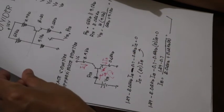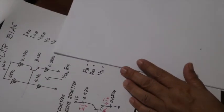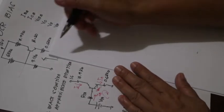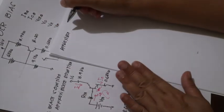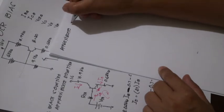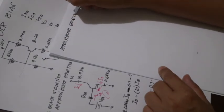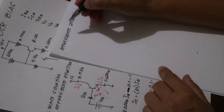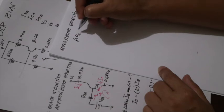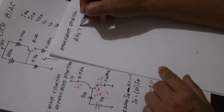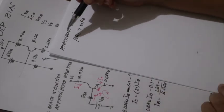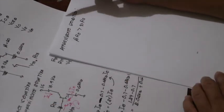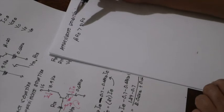When do we have the approximate solution? When can we use the approximate solution? For the approximate solution, there is a condition to satisfy: beta times RE should be greater than 10 times R2. If this condition is satisfied, then we can actually do approximate solution.